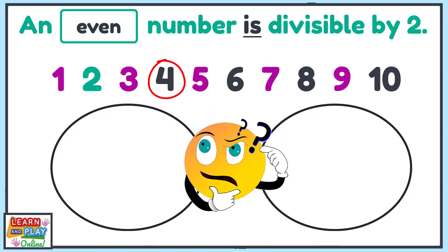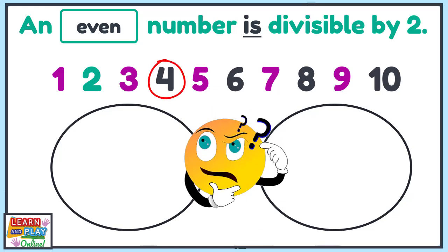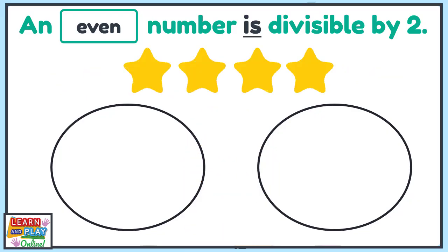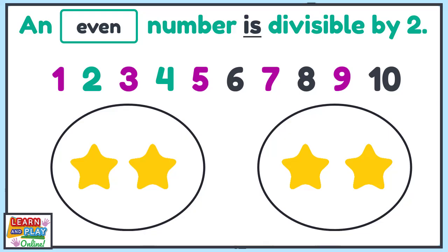If you said 4, you are correct. That is because 4 is a number that is divisible by 2. If we now have 4 stars and we shared it into 2 groups, we would have equal groups. And that proves that 4 is an even number.